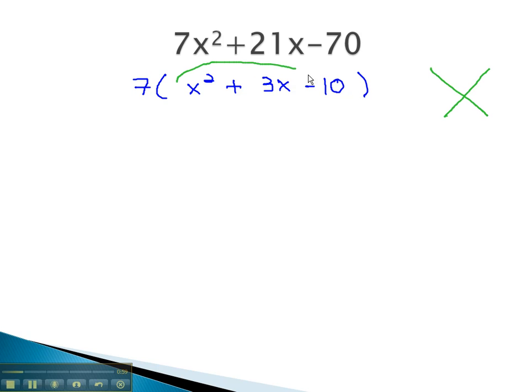Using the AC method, 1 times negative 10 is negative 10, and we want to add to 3. This is possible with 5 and 2 if the 2 is negative.